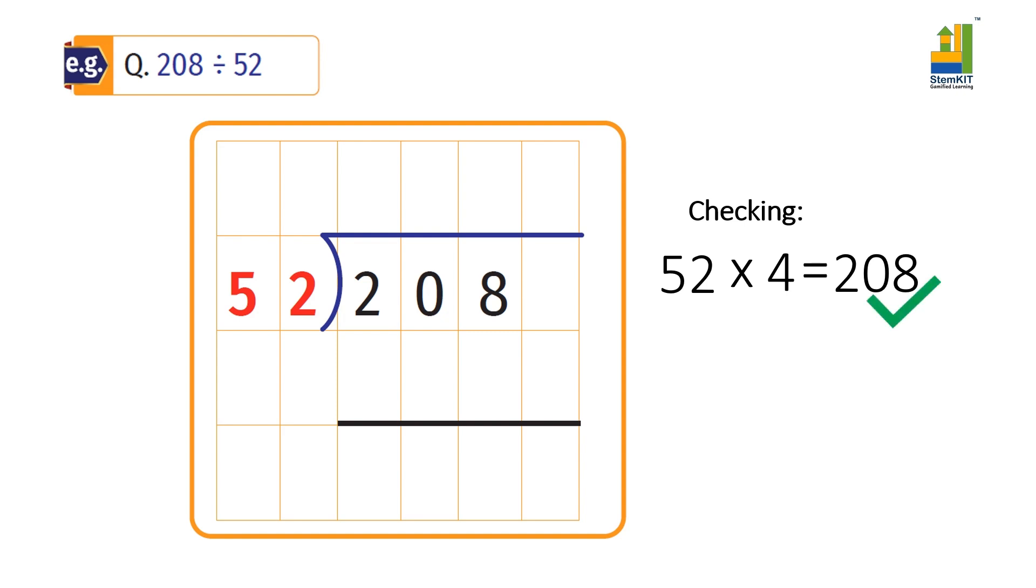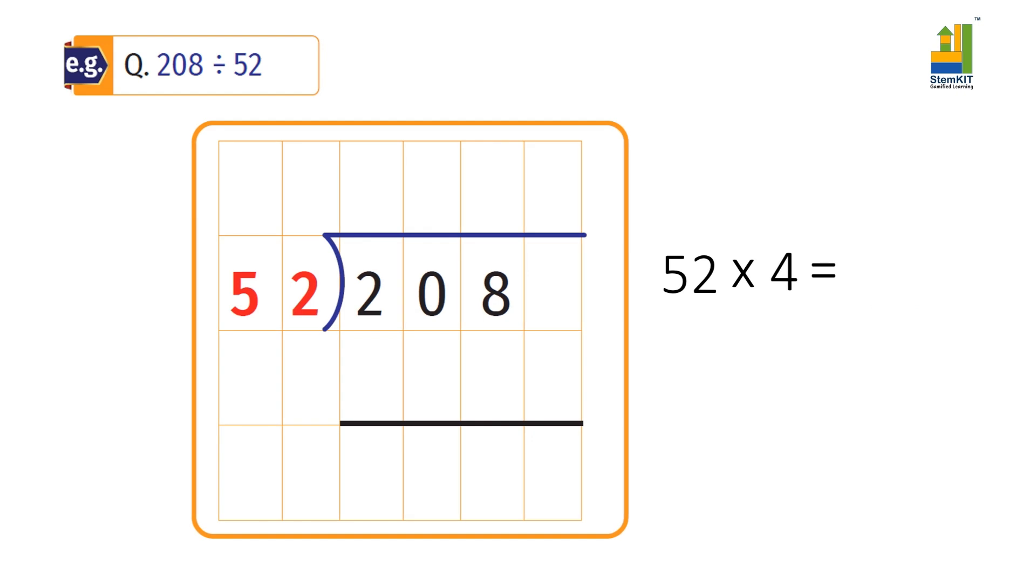208 is exactly equal to the product, so we have our answer. We fill in the division format. We have 4 as quotient and 0 as remainder.